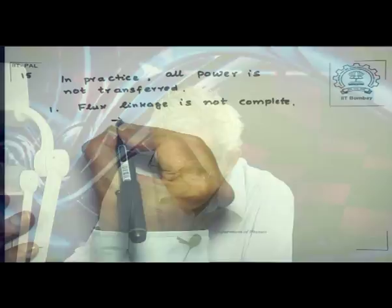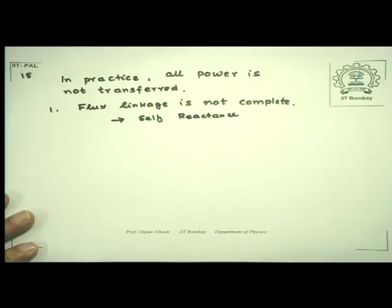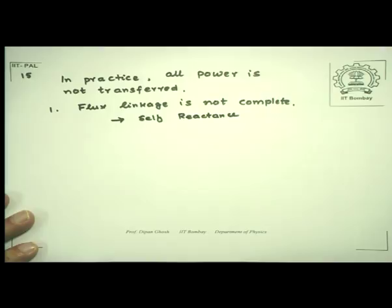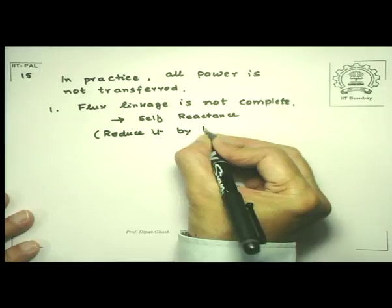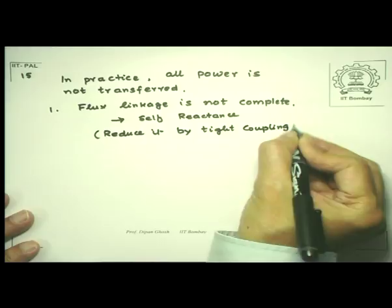This flux linkage in both parts of the circuit will lead to what is known as self-reactance. We can reduce the effect by tight coupling. What is done in tight coupling is to wind the turns of the secondary on the same core on which the primary windings are put, so that the coupling becomes somewhat tight.